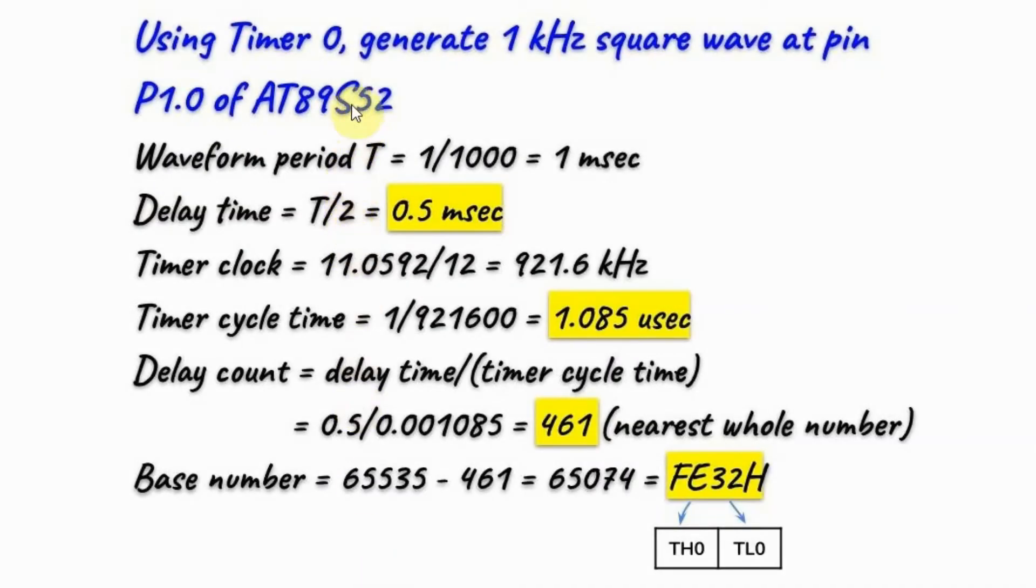In this example, we'll be programming timer 0 to run in mode 1 as a 16-bit timer. The objective is to generate a 1 kHz square wave at pin port 1.0 of the microcontroller. In other words, we need to find the base number which is a 16-bit value that we store inside the timer 0 register to give us at the output pin a 1 kHz square wave.